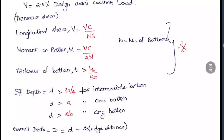The transverse shear for battens is also 2.5% of the design axial load. The longitudinal shear V1 = Vc / (ns). The moment on batten = Vc / (2n). Thickness of batten t > lb / 50. Effective depth for intermediate batten > 3a/4, for end batten > a, and for any batten > 2b. The overall depth = d + 2 × (edge distance), where s is the centroid spacing and n is the number of battens.